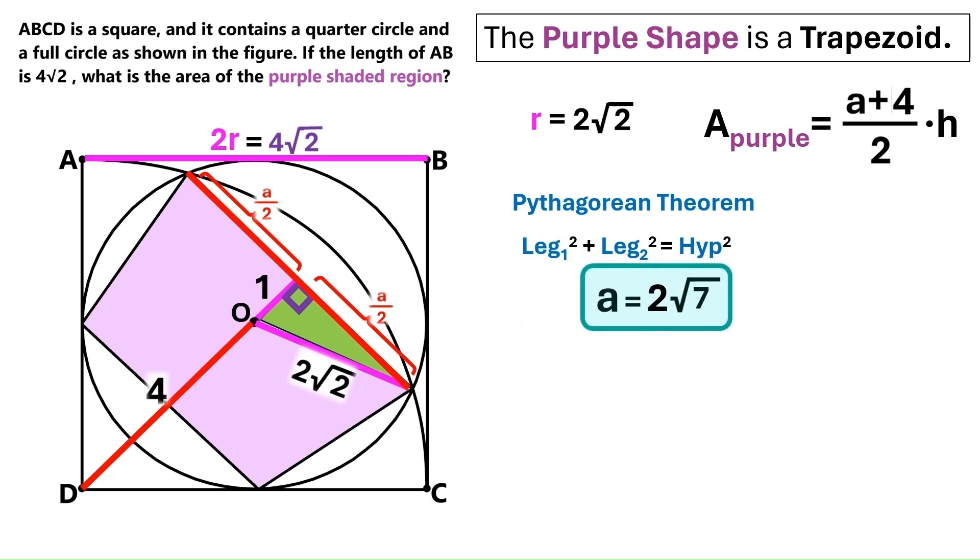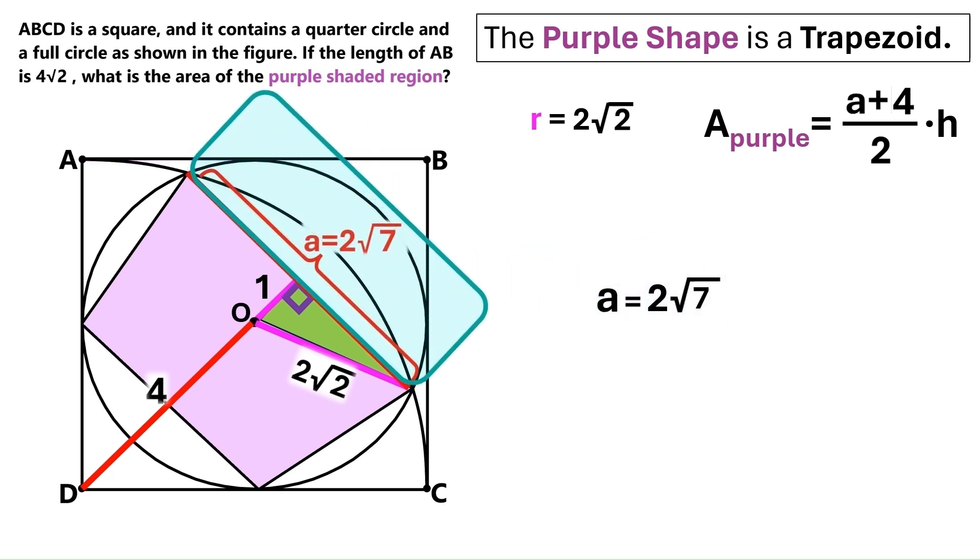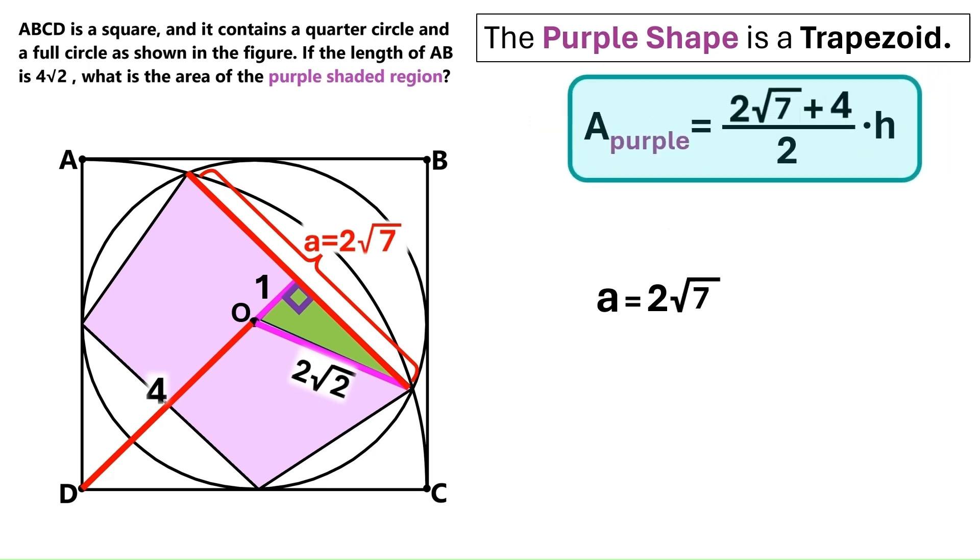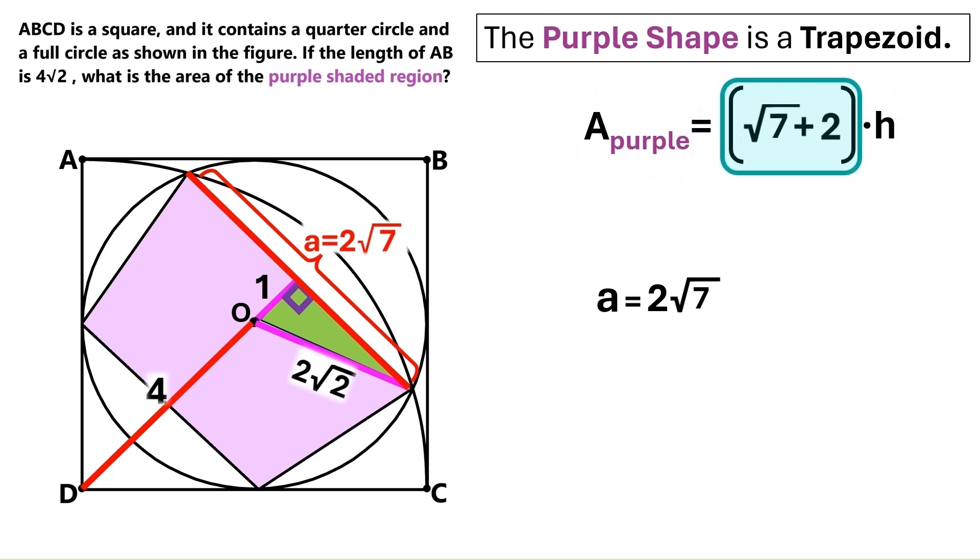Anyway, a turns out to be 2 times root 7. We have found side a of the purple trapezoid. And we can now change this a to 2 times root 7. And I think I'll move this equation to a better place. Now this part simplifies to this.